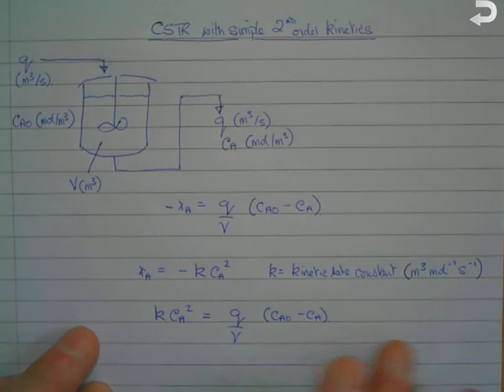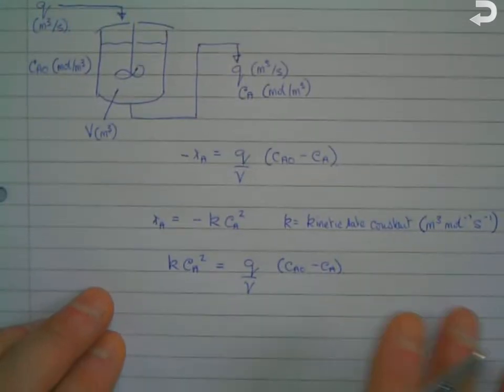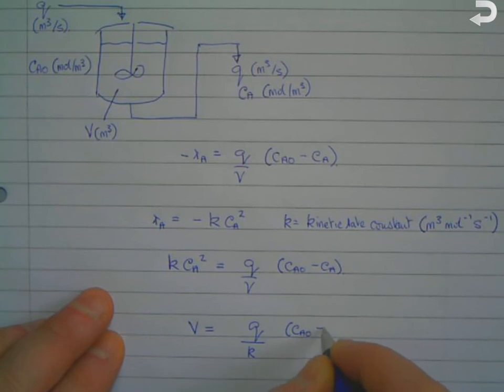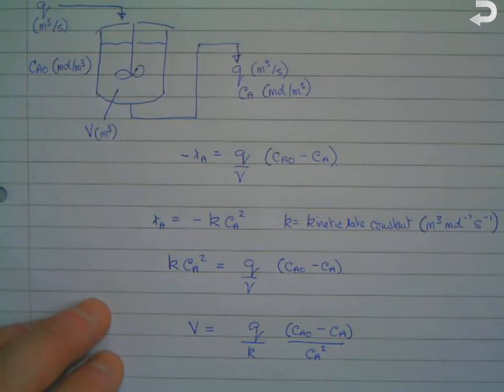If you're doing a design and you want to know what's the required volume, you simply rearrange that so that V is on the left hand side, and you get that V equals Q over K, the kinetic rate constant, multiplied by CA naught minus CA divided by CA squared.